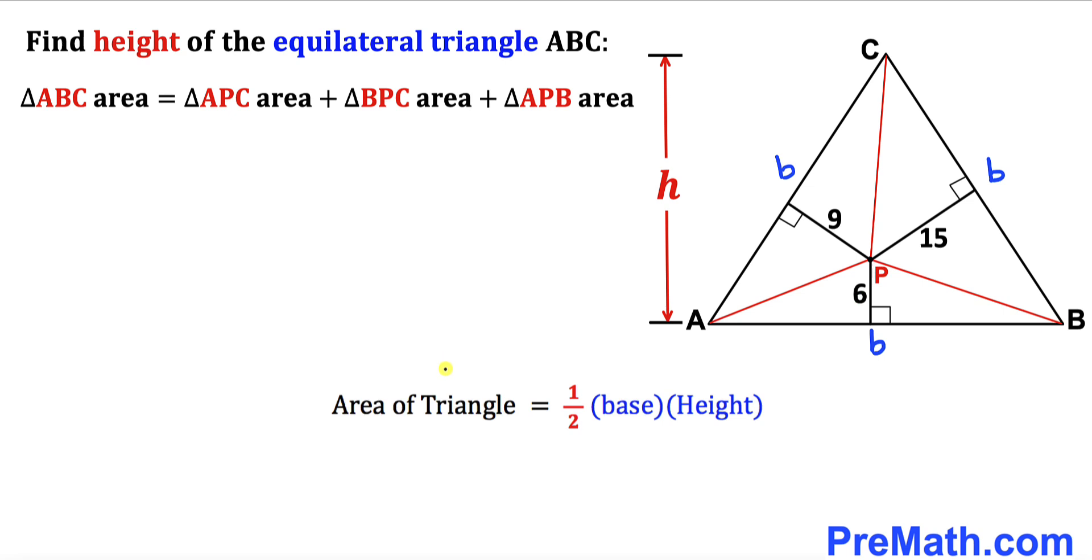And now let's recall the area of the triangle formula: area equals to a half times base times height. So let's look at the area of this triangle ABC whose base is b and the height is h. Therefore the area of this triangle ABC is going to be a half times base b and height h equals to, and now let's look at this triangle APC.